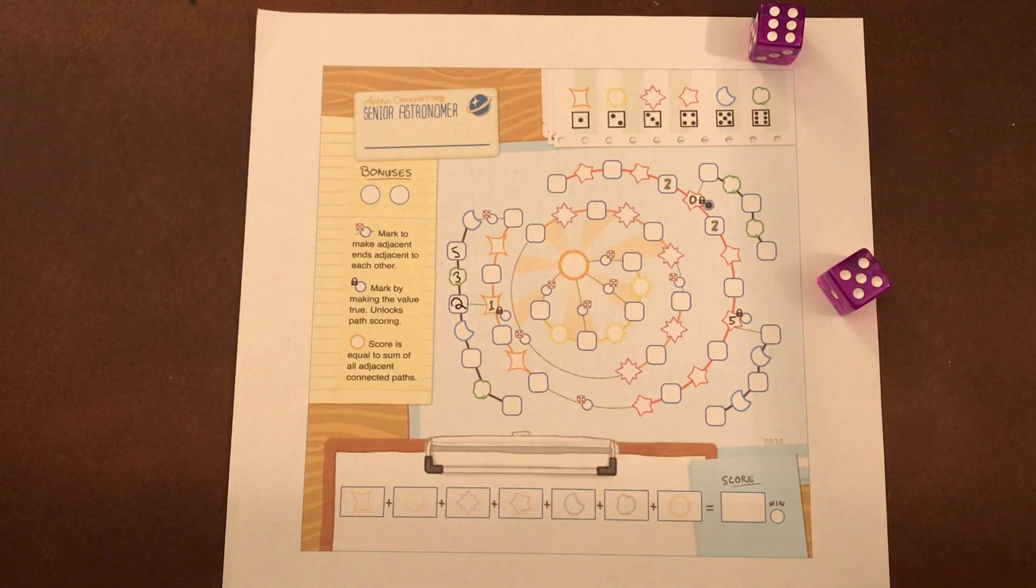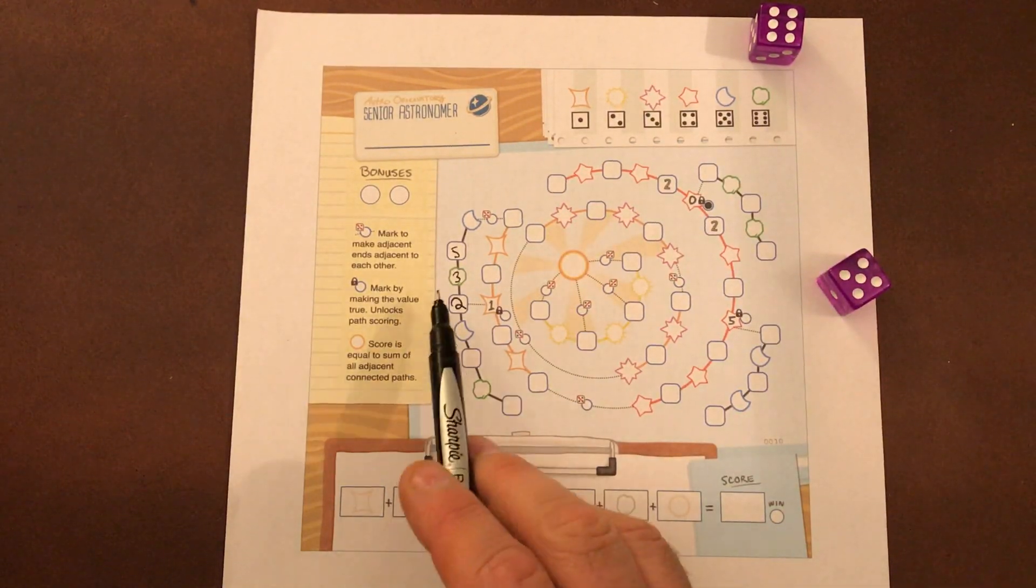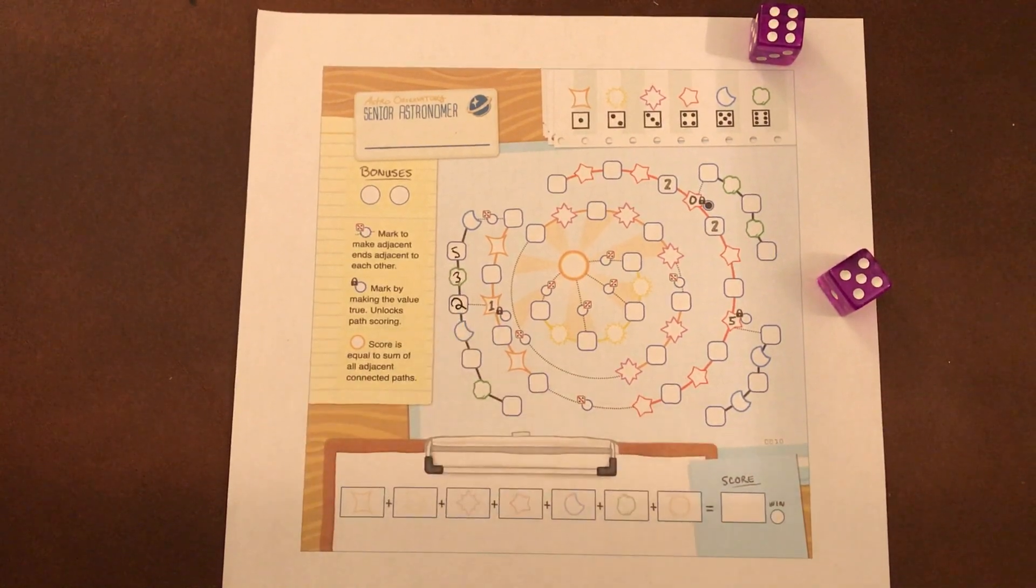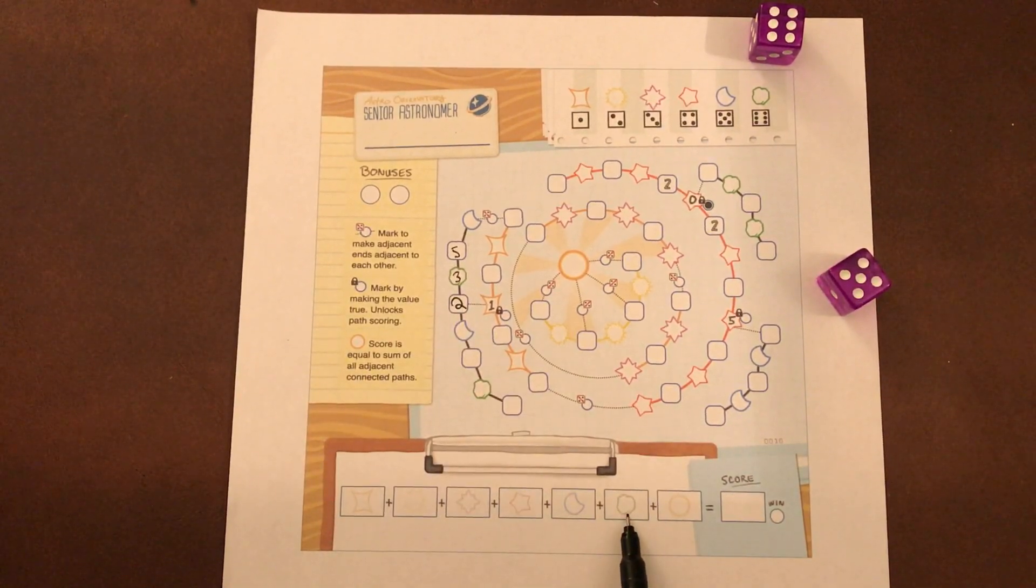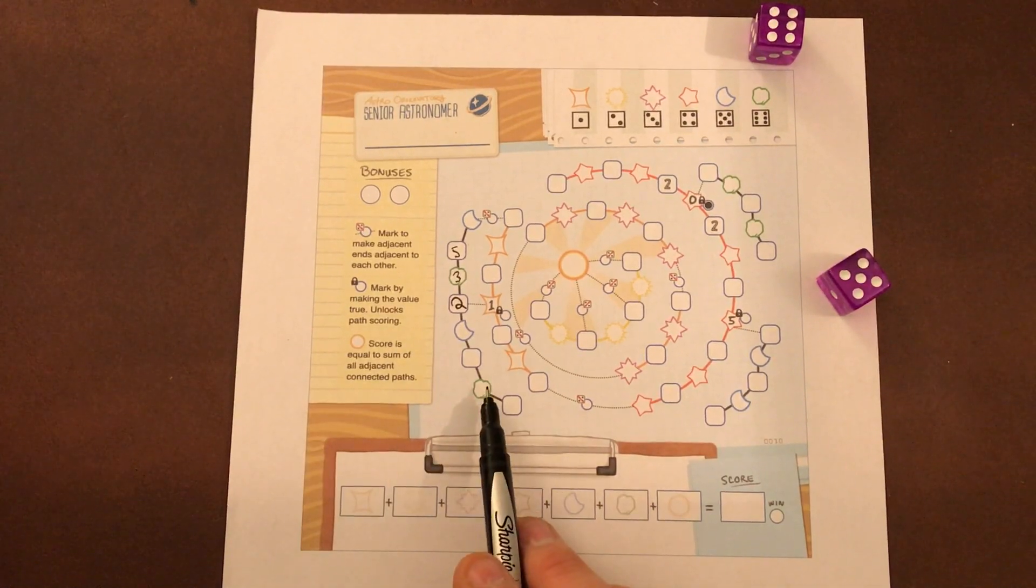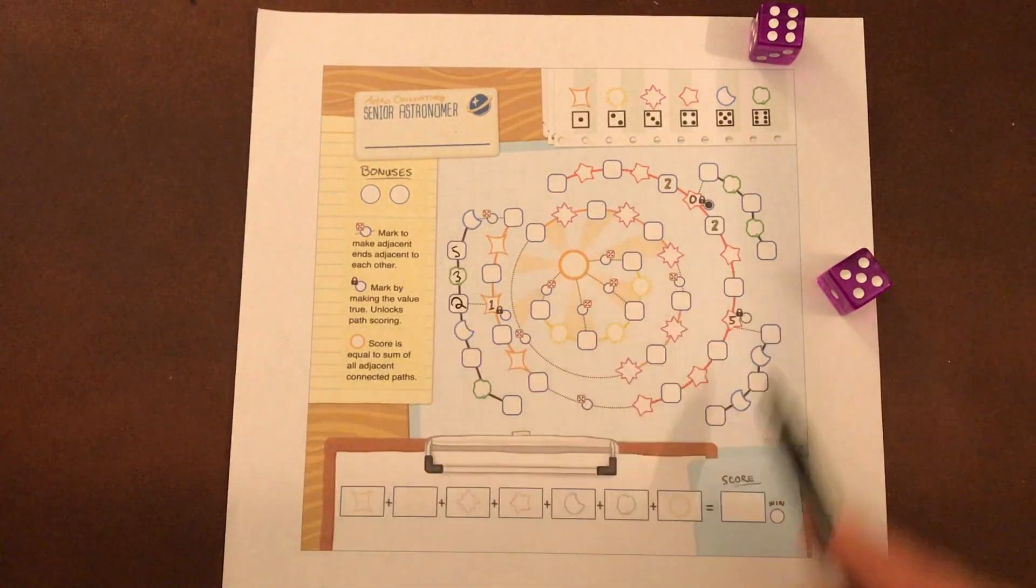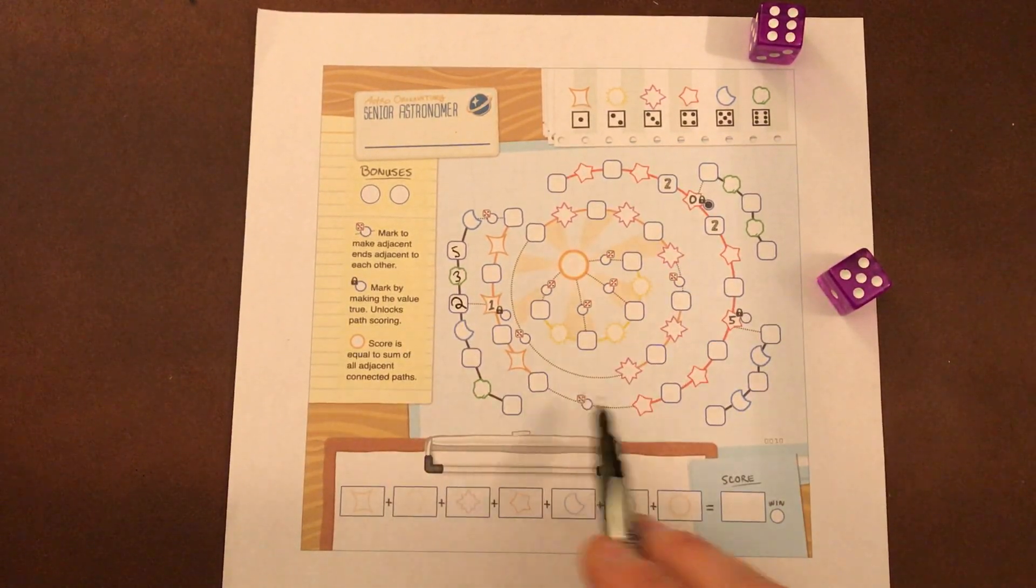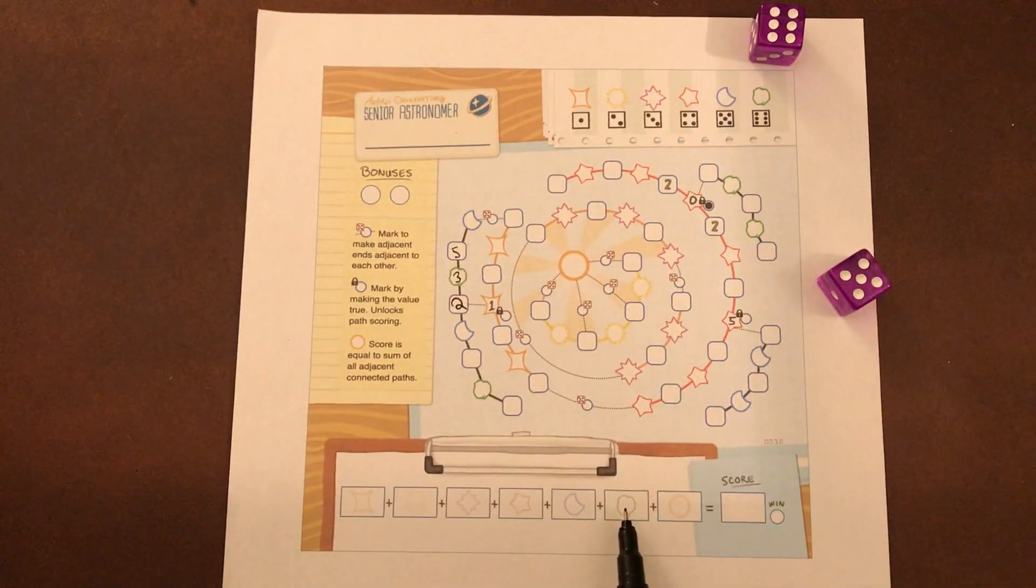And what happens is over the game you're going to fill in all these symbols and you're going to score at the end just the symbol. So there's my little asteroid. I've got three points. I might have a four here, a five, whatever, all throughout there. You're going to tally up all your asteroids. Put them right there.